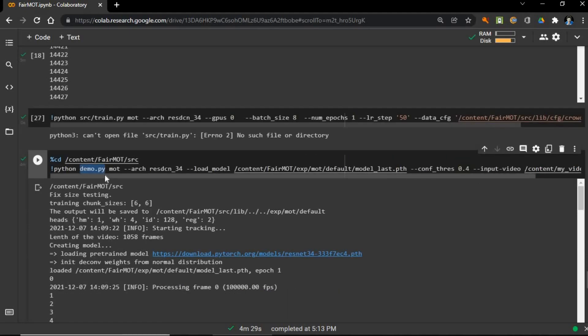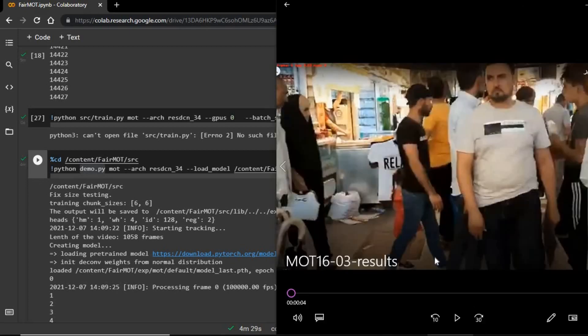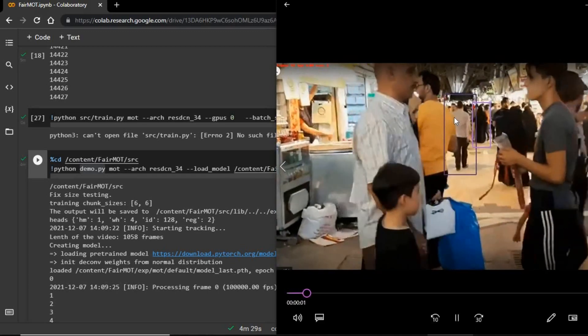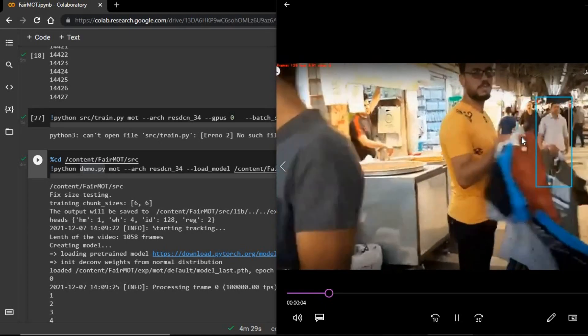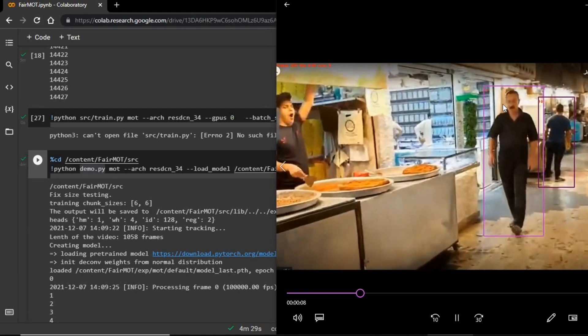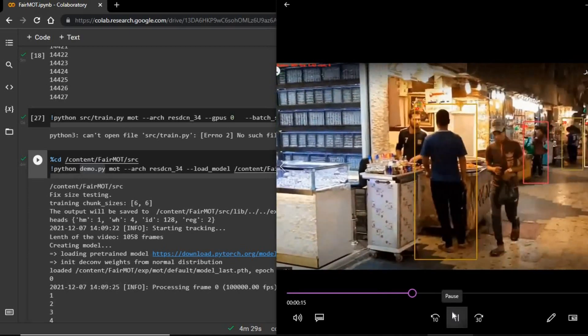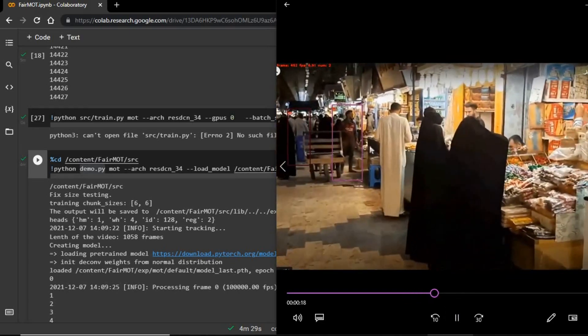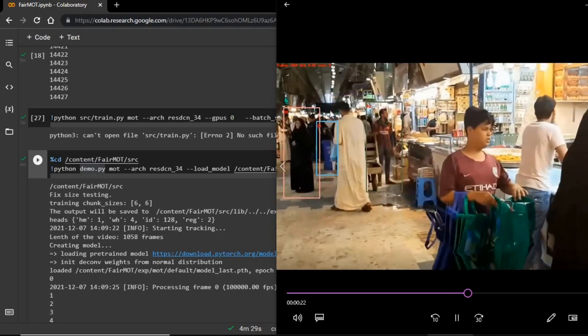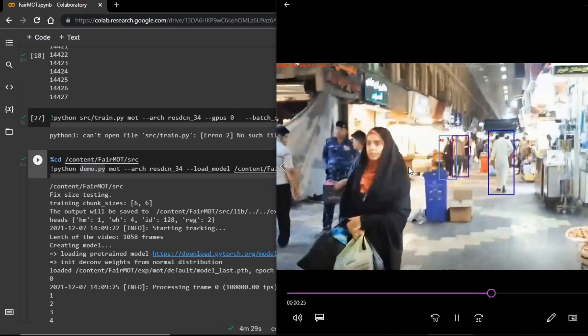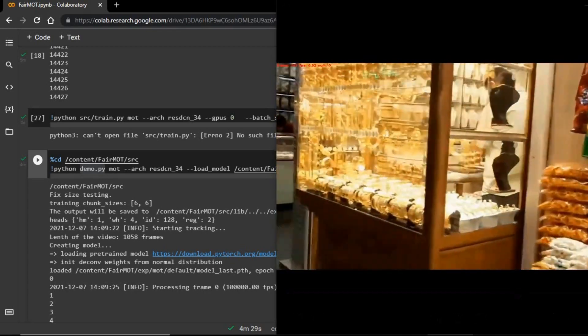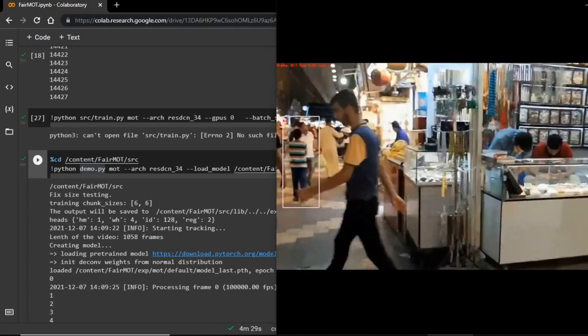After running demo script, you will see demo folder in FairMOT folder, and inside the demo folder you will see the output video. Let's see the results. Here is our video. As you can see here, the model detects and tracks each object in the video. It gives each object unique ID. It's not that good because we trained it just one epoch, but you can increase the number of epochs and get better results.